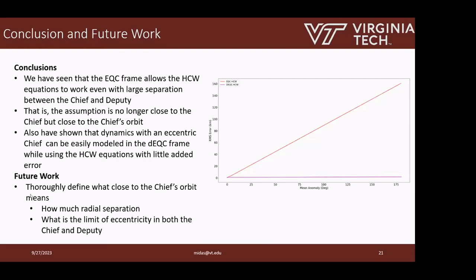For future work, I'm trying to accurately describe how much radial separation you can have between the chief and deputy, and kind of describe a donut around the GEO belt where using the EQC or D-EQC frame and your HCW equations, if you're within that donut, you'll have more accuracy. It gets a little tough because the error that comes into these is not just due to radial separation — eccentricity adds into this error as well. So it's not as easy as saying you have to be within a certain delta semi-major axis of the chief; your eccentricities need to be within certain bounds too — something I haven't quite figured out yet, but that's currently what I'm working on.